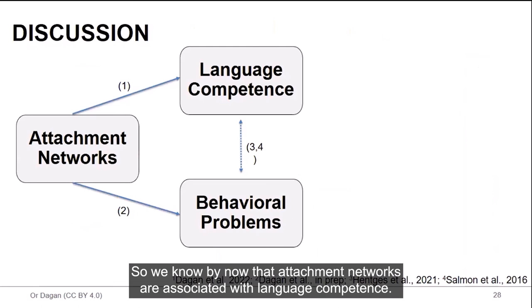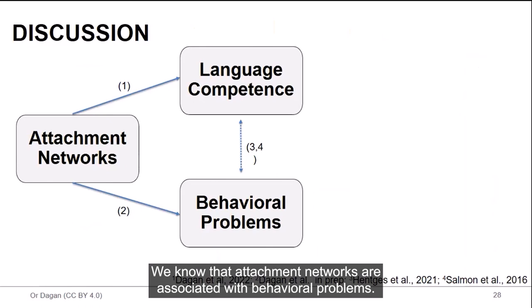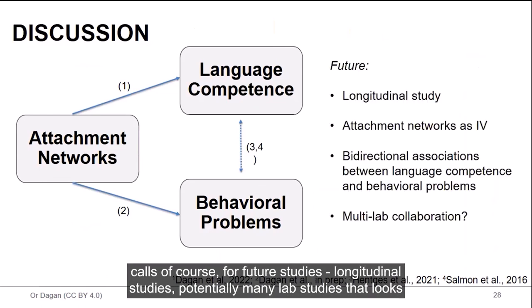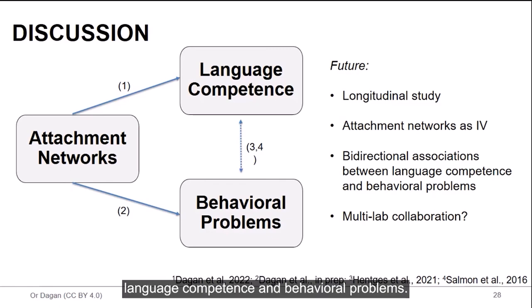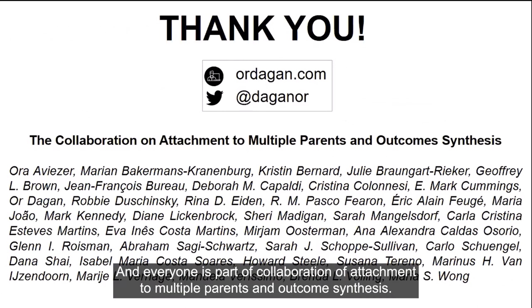So we know by now that attachment networks are associated with language competence. We know that attachment networks are associated with behavioral problems. And we also know that language competence is also associated with behavioral problems. And that calls, of course, for future studies on longitudinal studies, potentially multi-lab studies that look at attachment networks longitudinally and as a predictor of the bi-directional association between language competence and behavioral problems. And with that, I want to thank everyone who attended today, and everyone who is part of the Collaboration on Attachment to Multiple Parents and Outcome Synthesis. Thank you.